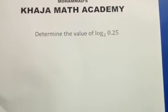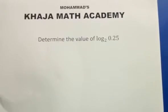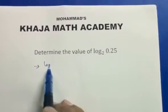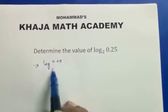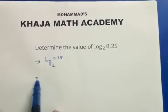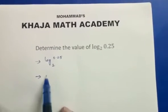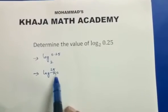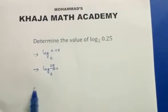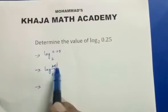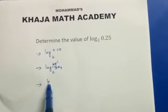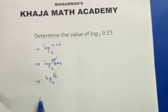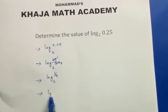Determine the value of log 0.25 to the base 2. Whenever it's a decimal, convert it into a fraction: 0.25 is 25 by 100, which simplifies to 1 by 4. So we need to find log 1 by 4 to the base 2.